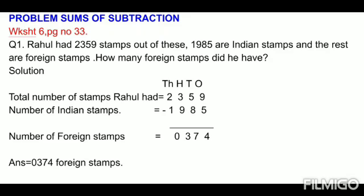Don't forget to put the mark of subtraction and write the separate answer. This is a sum of regrouping, that is of borrowing. When you subtract it after borrowing, you will get the answer. The answer is 374 foreign stamps.